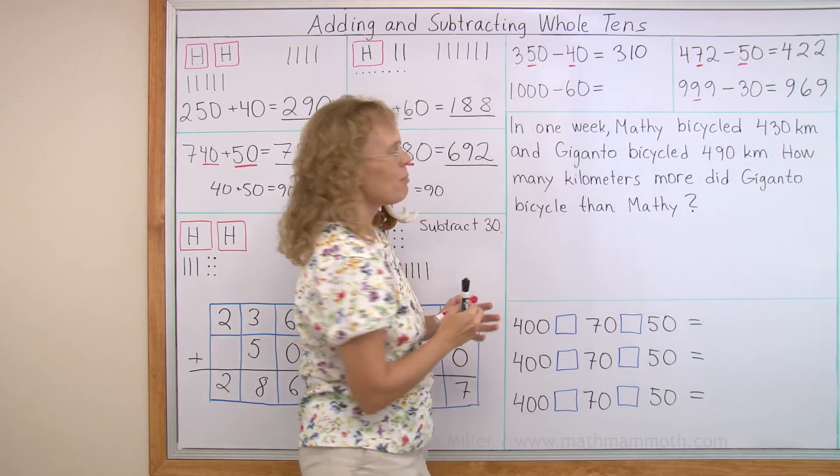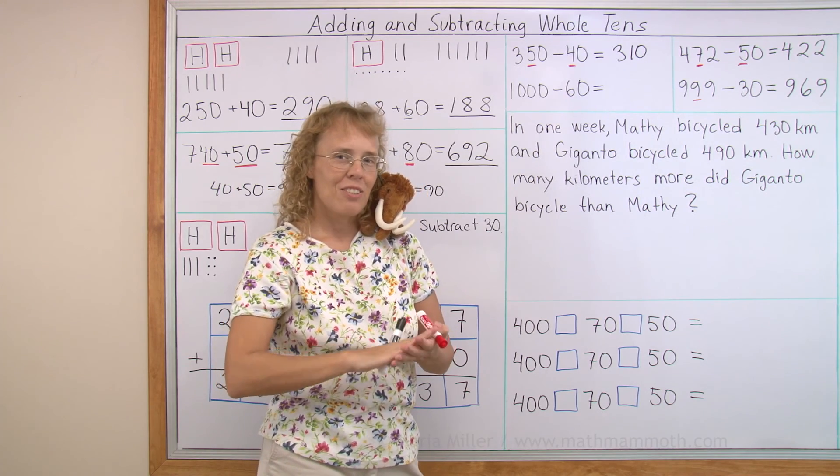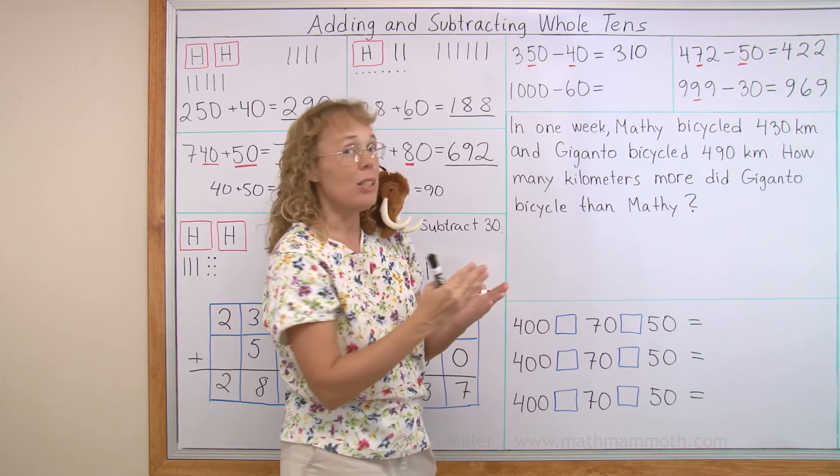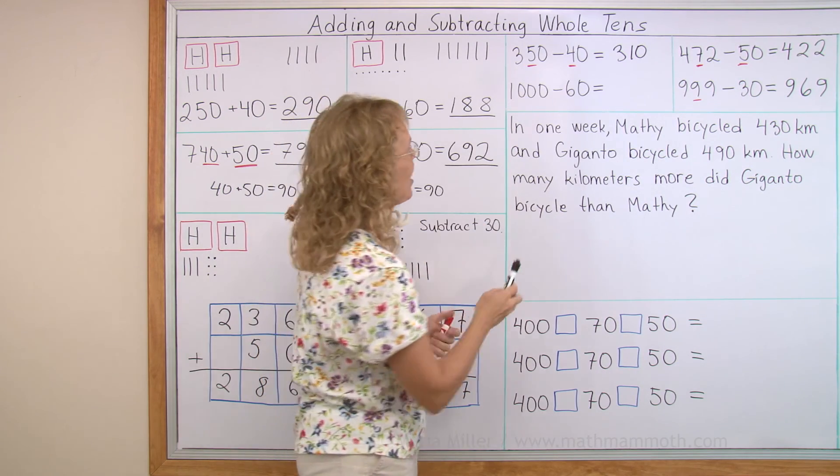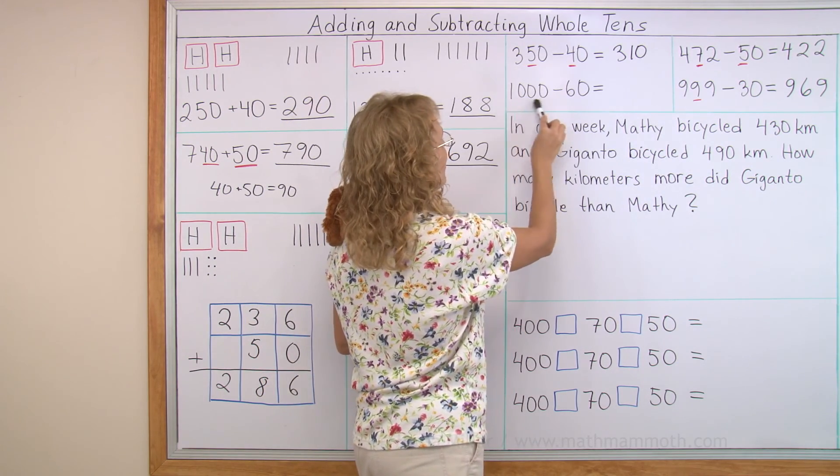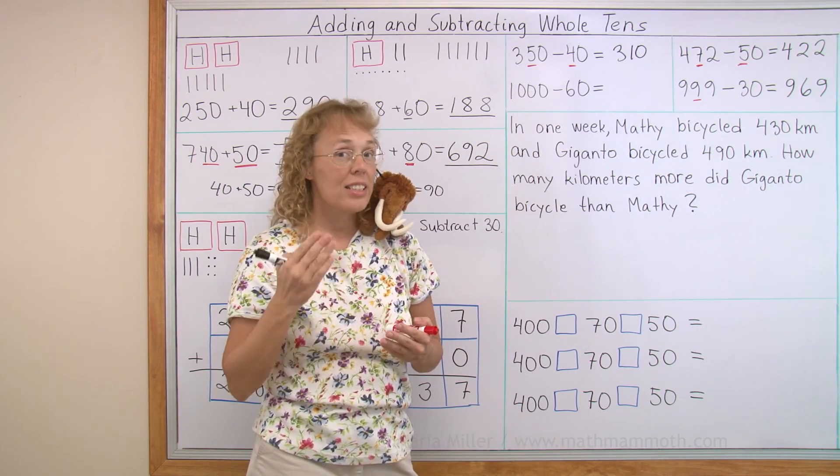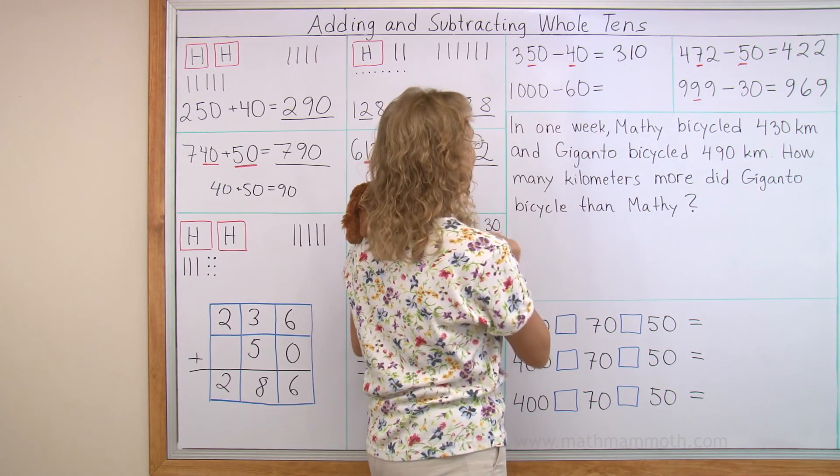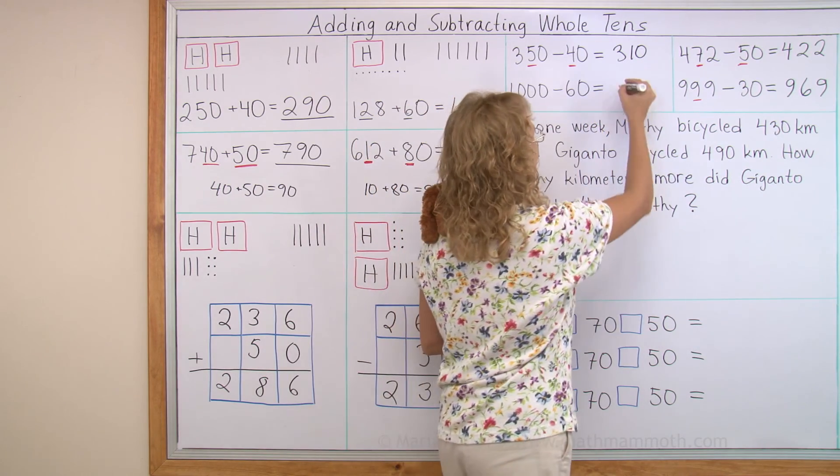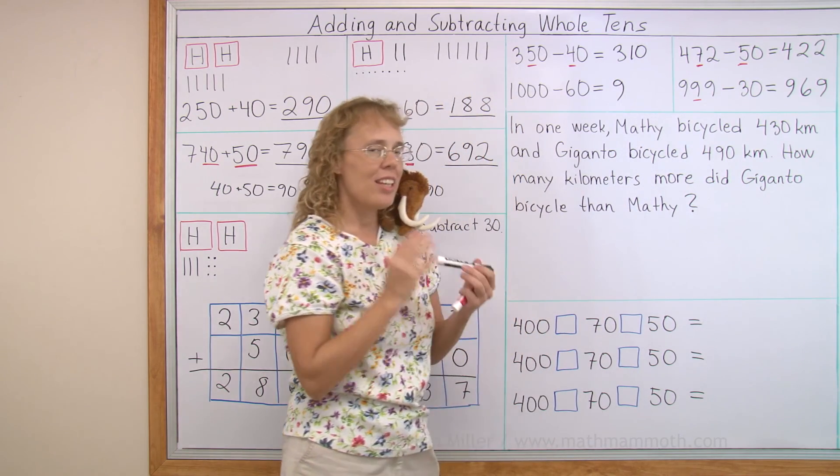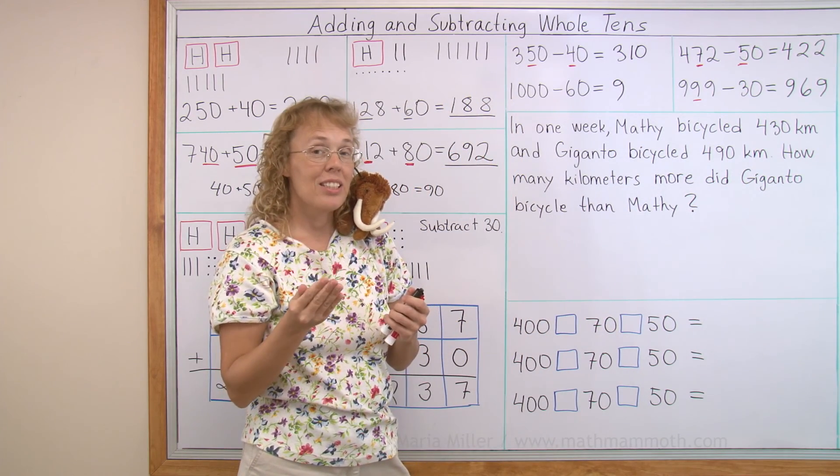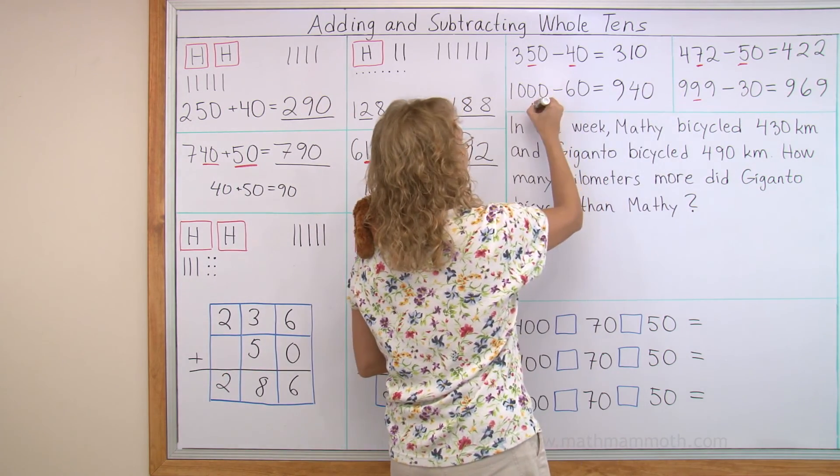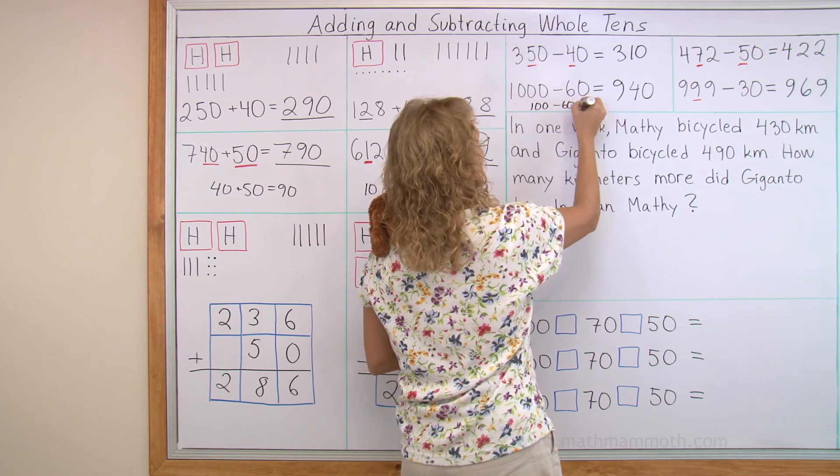Lastly, this one, 1000 minus 60. Now, think of 100 minus 60, because you have to take away 60 from 100, or ten tens. And here you have lots of hundreds here, right? 1000 is 10 hundreds. From one of those hundreds you take away the 60, so you will have left 900, right? And then, from the 100 you take away 60, you will have 40 left. 940. Your helping problem here is 100 minus 60 equals 40.